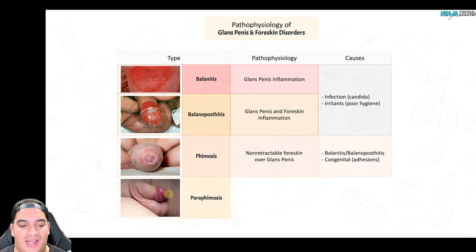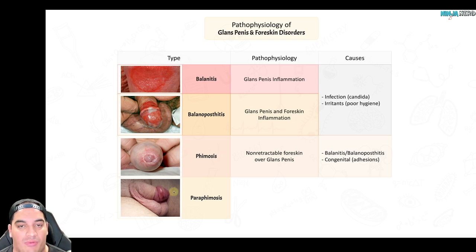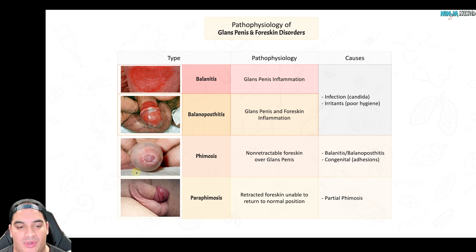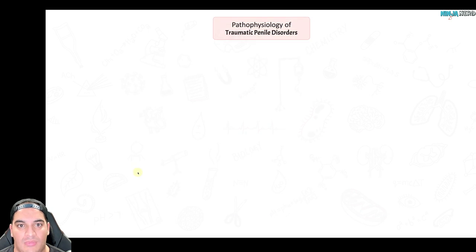Paraphimosis is basically the opposite of phimosis. The foreskin forms like a ring and gets stuck right before the glans penis — you can't return it back over the glans penis. This tight ring is stuck and cannot be brought back. This is often due to a patient who has partial phimosis, where they tried to retract it a little bit and it got stuck and can no longer be returned over the glans penis.